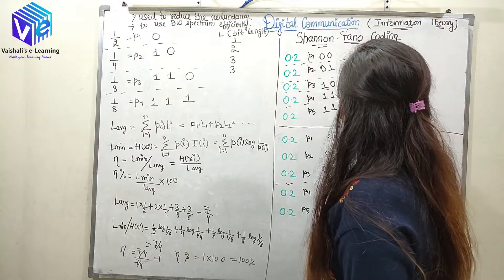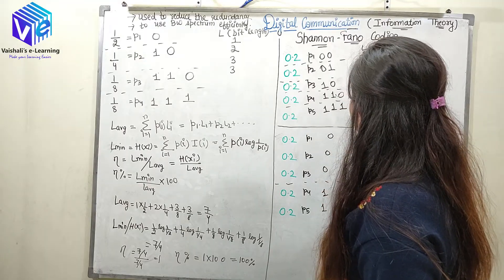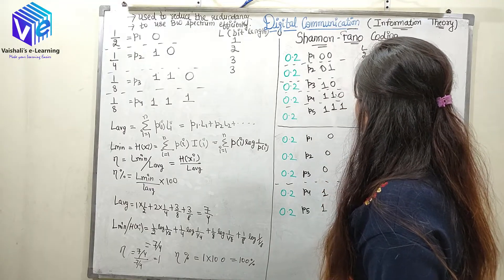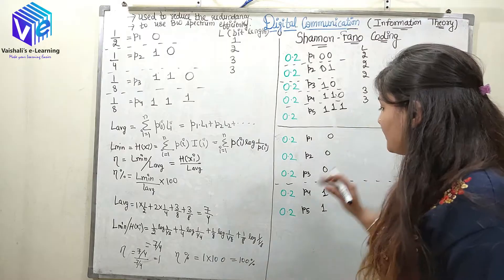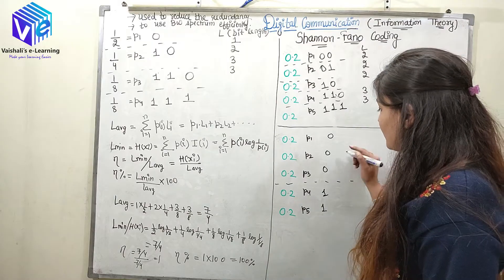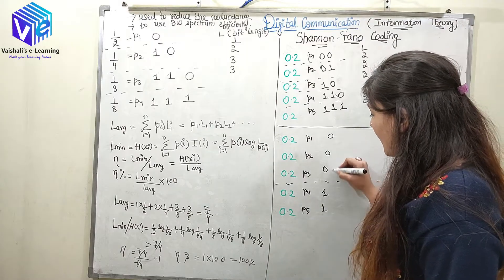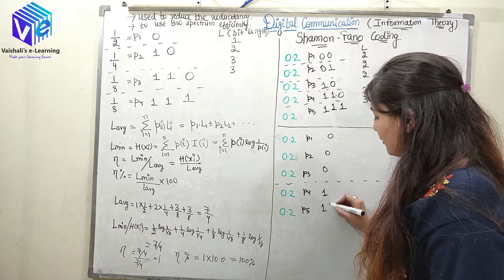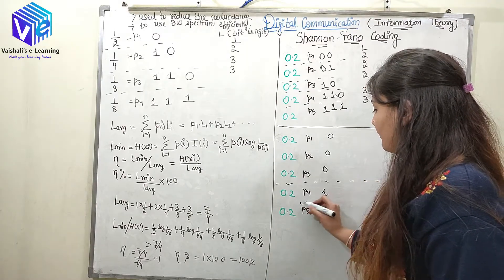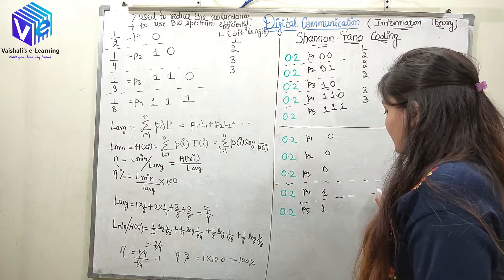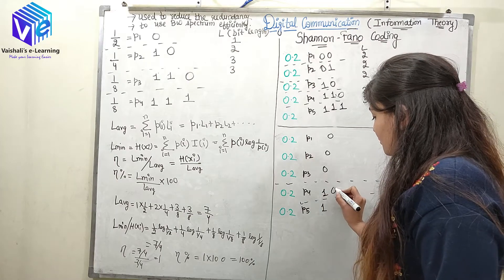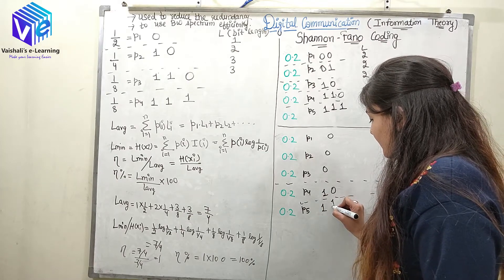For the first student's encoding, the bit lengths L come out to be 2, 2, 2, 3, 3. In the second student's encoding, the upper half has three symbols and the lower half has two, and after further division the codes are assigned 0 and 1 at each level.